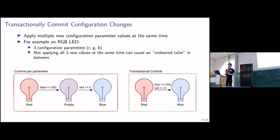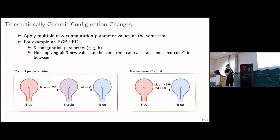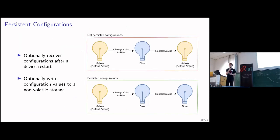We want to be able to apply configuration parameters at the same time atomically. Because, for example, if we have multiple parameters — again, the RGB light bulb — maybe we want to change from red to blue. If you change the blue value first, it becomes purple, then when you change the red value it becomes blue. But if we are able to change those at the same time, we change the blue value and the red value simultaneously, and it immediately goes to the correct color. We also want it to come back with the color that we set it to last time.